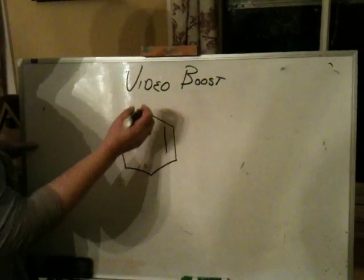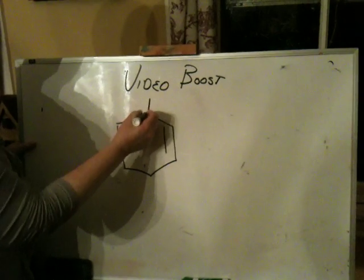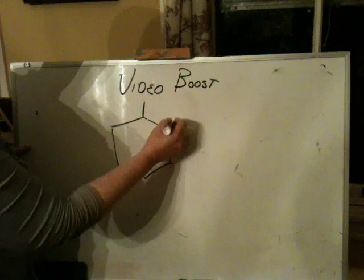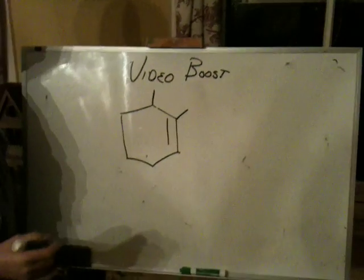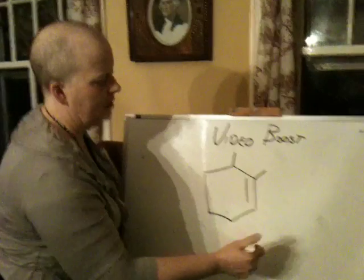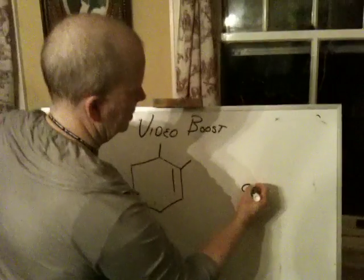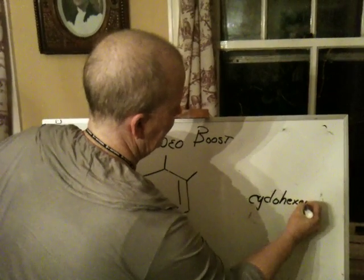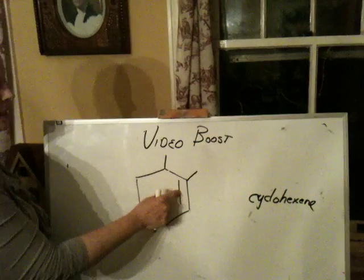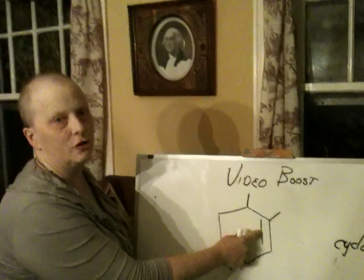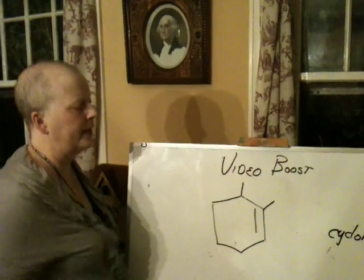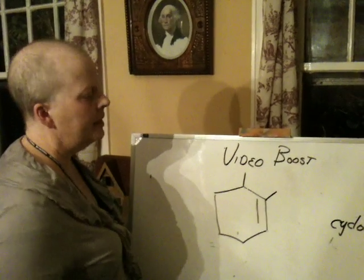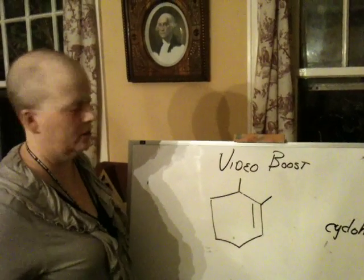If you have something like this, the way the rules work — and it's kind of weird — is that you would call this a cyclohexene. As I said in class, this double bond is automatically number one because you're in a ring. The ring has no beginning or end, and this is a high priority group, so it gets the number one position. So I don't need the number for that.